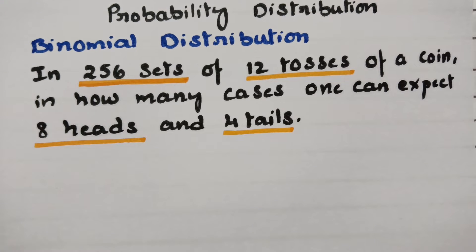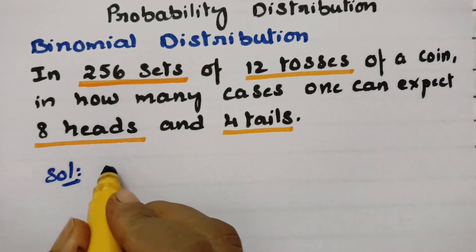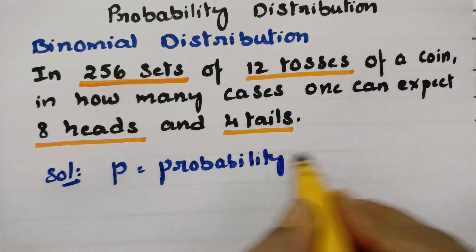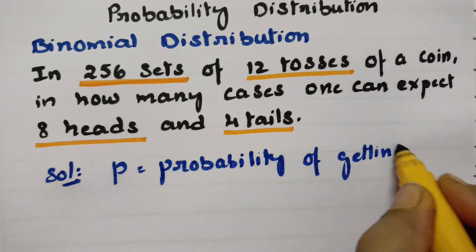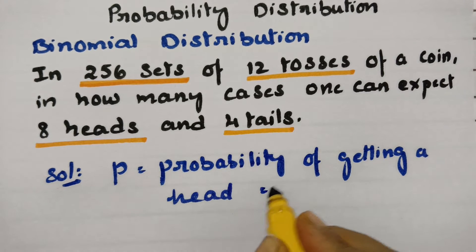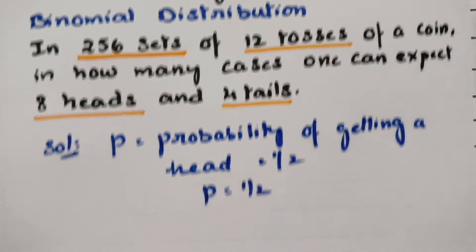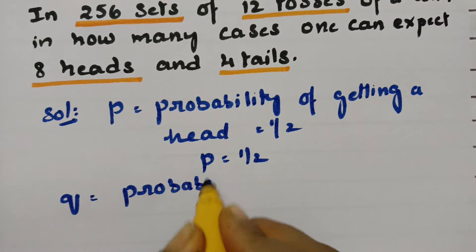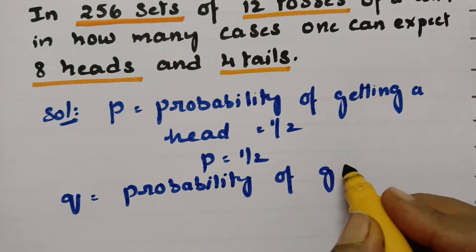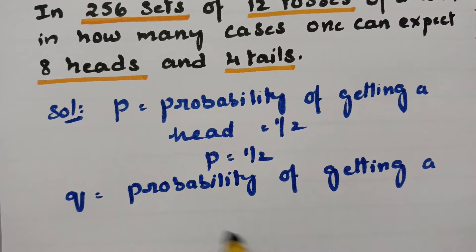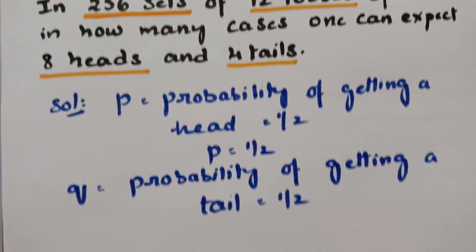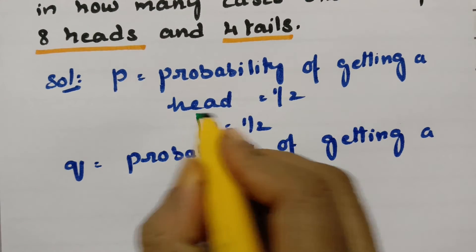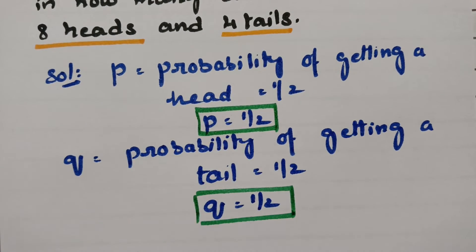In this case, first of all, what is the probability of getting a head? It is very simple — the probability P of getting a head is half. Therefore, P is equal to half. And Q is nothing but the probability of not getting a head, i.e., getting a tail. The probability of getting a tail is again half. Therefore, Q is equal to half.